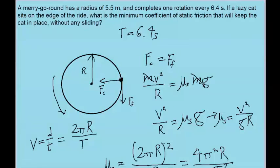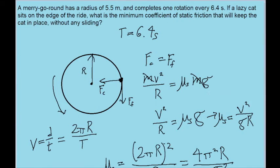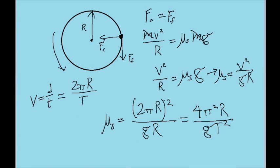We'll just plug in our givens now. So 6.4 seconds for big T, and 5.5 meters for r. And when we do that, we find a coefficient of static friction of 0.54. And that is our answer to the problem.